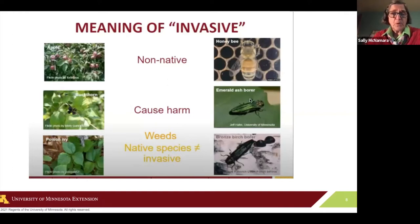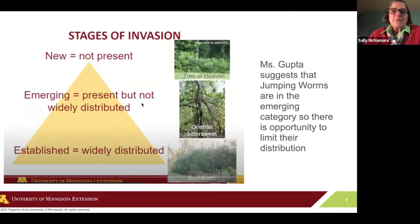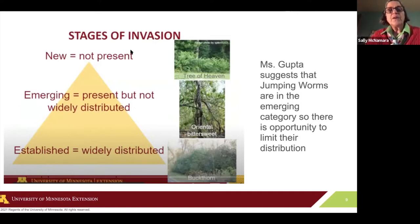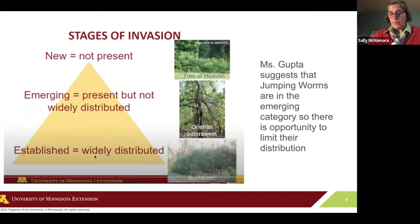Obviously, buckthorn and ash borer are both causing tremendous harm in our environment. One of the important things about the jumping worm is that it is what Ms. Gupta describes as an emerging invasive species. There are new invasive species that we know could come — that was the jumping worm ten years ago. Now it's not terribly widely distributed, but it's in some places. And then there's buckthorn and emerald ash borer, which are everywhere.